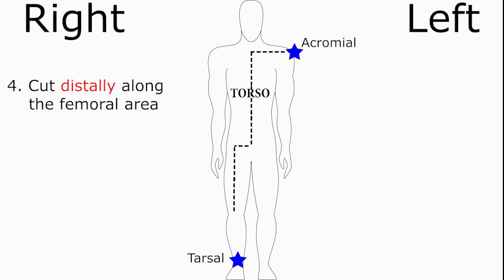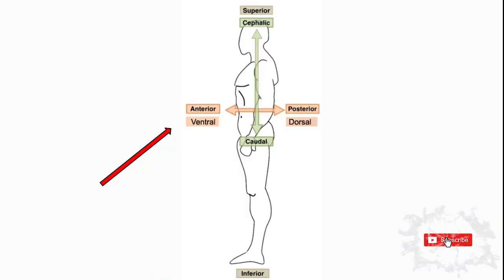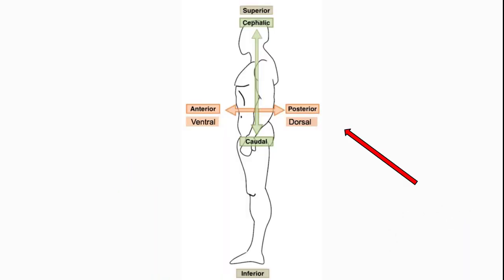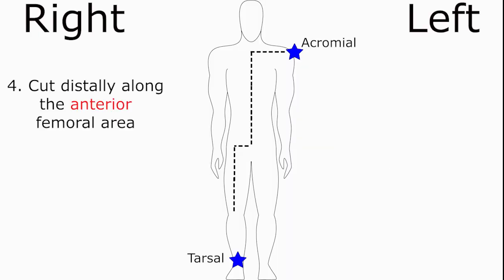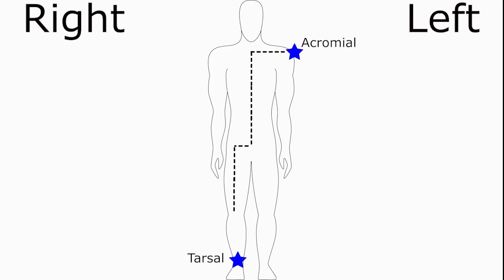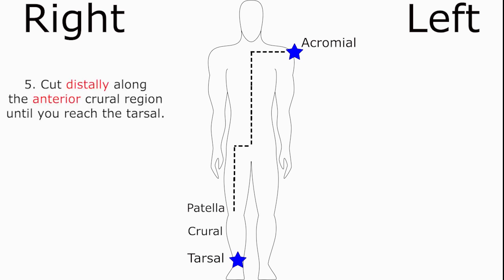But Dr. Reed, is this the anterior or posterior femoral area? That's a great question. Anterior or ventral means front, and posterior or dorsal means back. So we are cutting distally along the anterior femoral area. The lower part of your leg between your patella — the front part of your knee — and your tarsal is called the crural area. So we will continue cutting distally along the anterior crural region until we finally reach the tarsal.